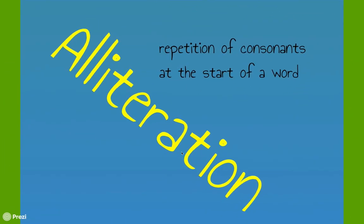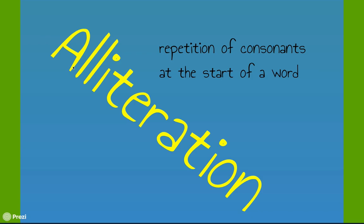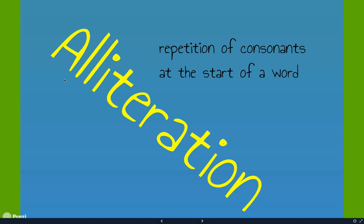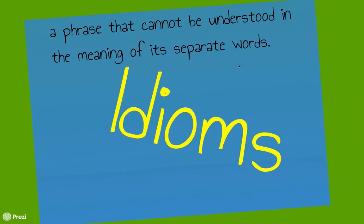An alliteration is the repetition of consonants at the start of words. Remember, vowels are A, E, I, O, U, and sometimes Y; consonants are the rest of the letters. A classic example is 'Sally sells seashells by the seashore' — the letter S is continuously repeated at the beginning of each word, like a tongue twister.